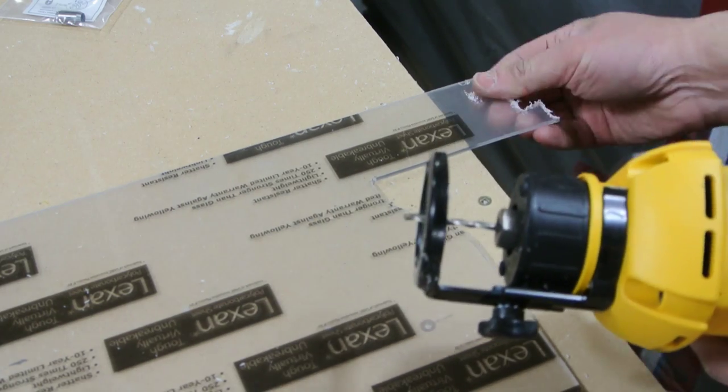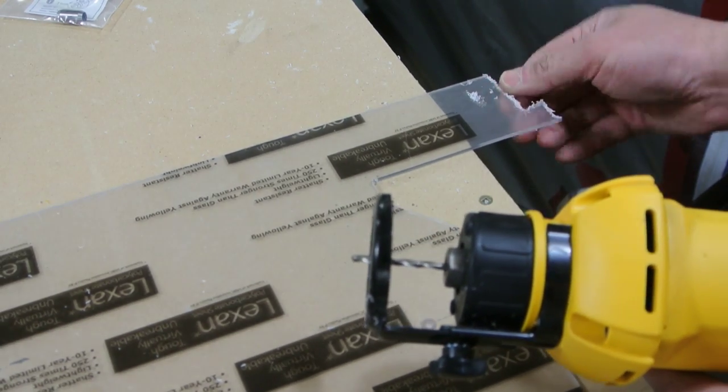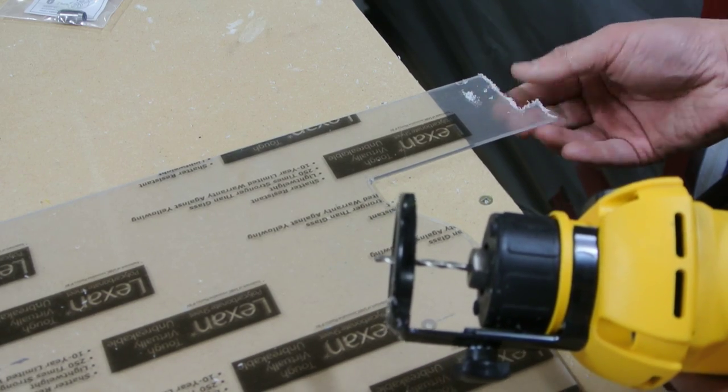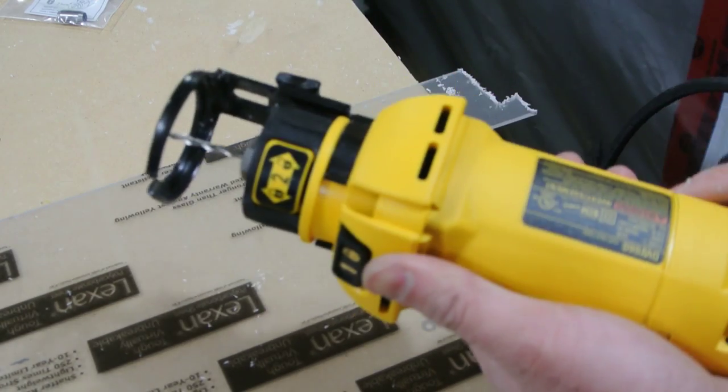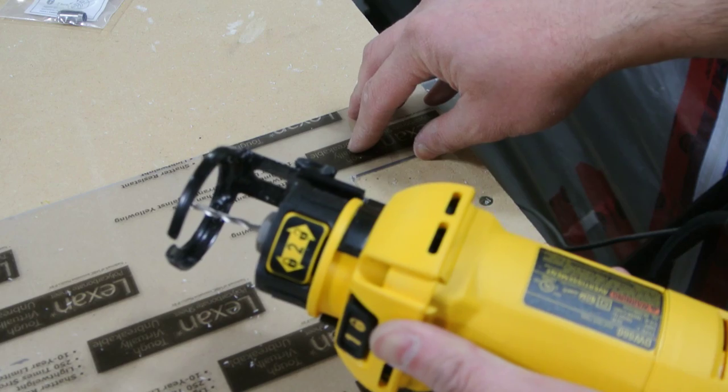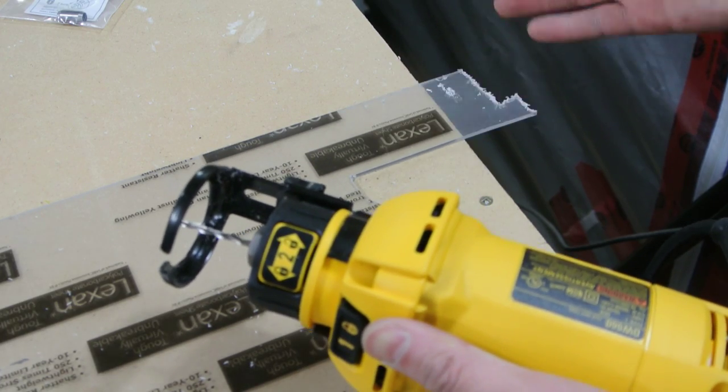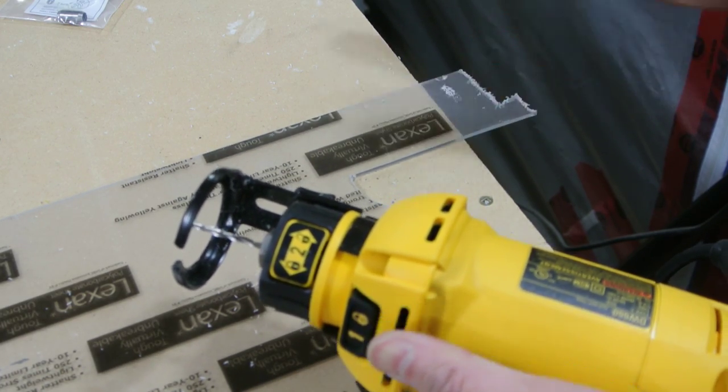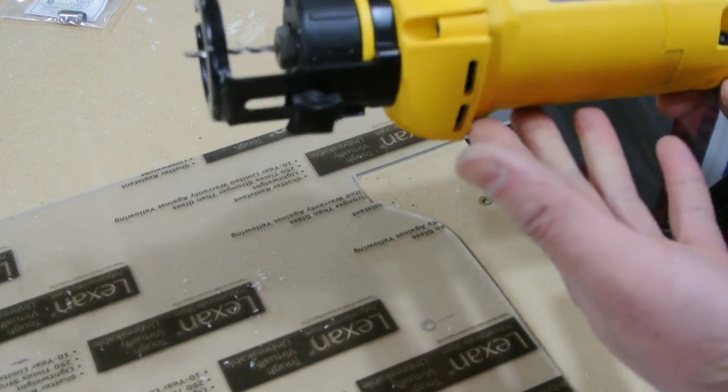So it did a nice cut here, a little frayed probably because the bit I'm using isn't the best. But as you can see, lots of power. This lexan I believe is an eighth thick, one eighth of an inch thick, so it went through it no problem. Yeah, that's pretty much all there is to this tool.